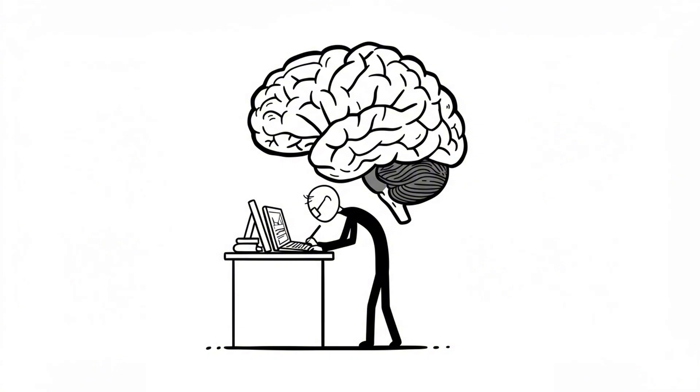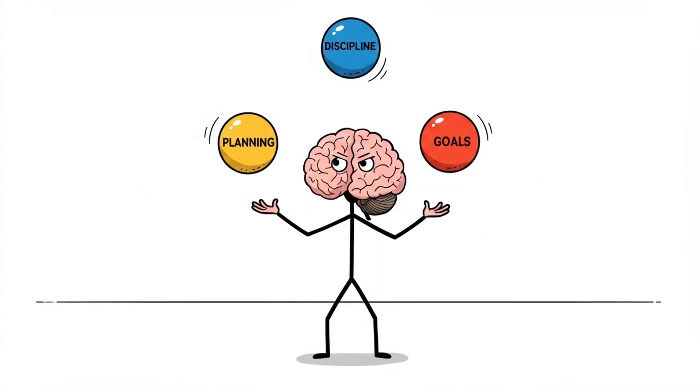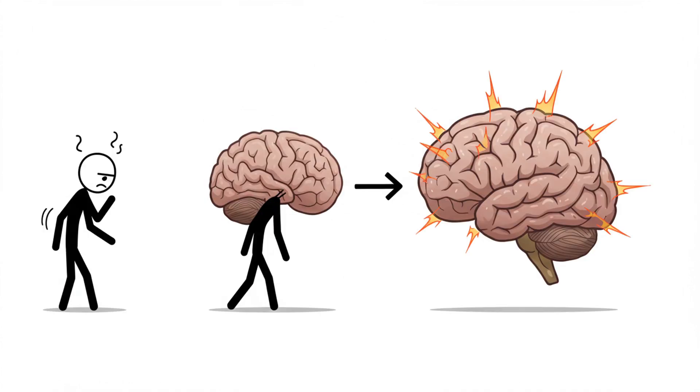On the other side, the prefrontal cortex, your rational brain, responsible for planning, discipline, and long-term goals. It's newer, more fragile, and it gets tired fast.